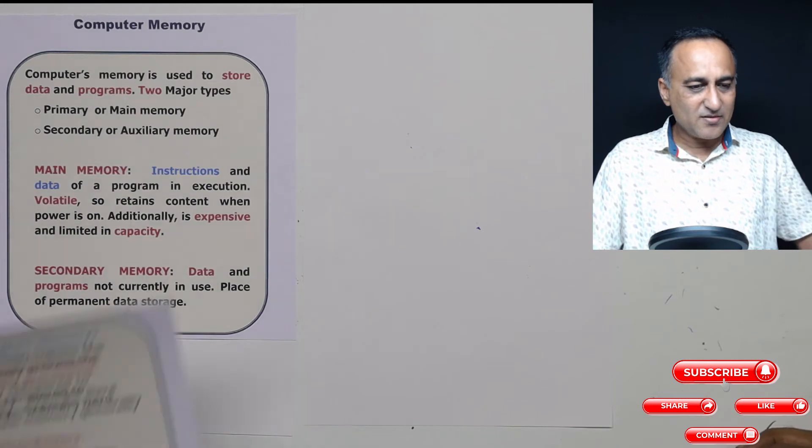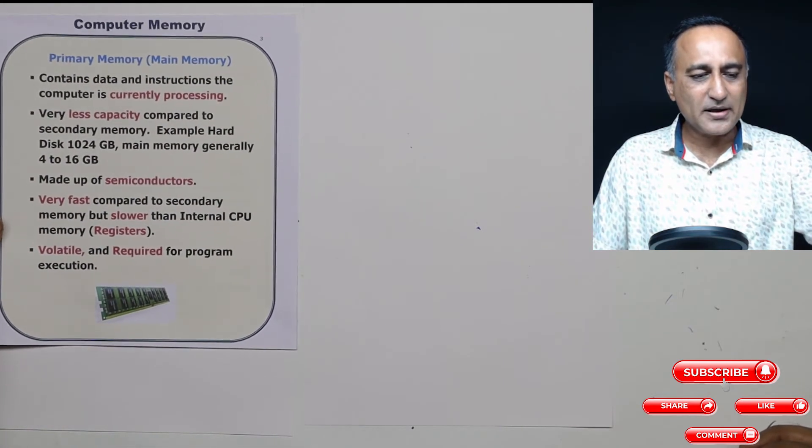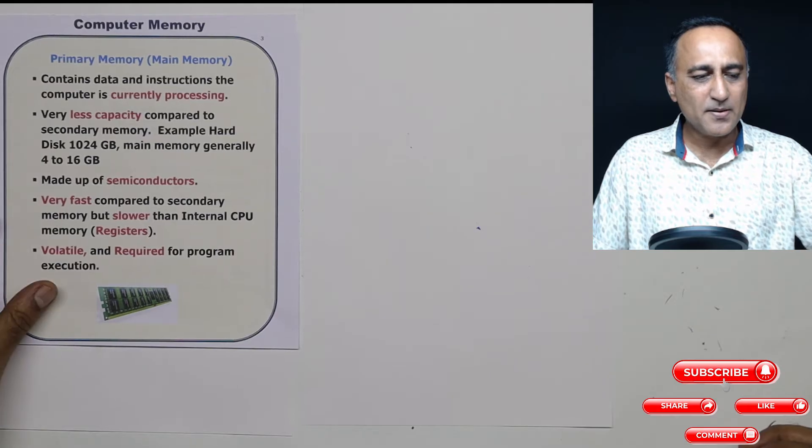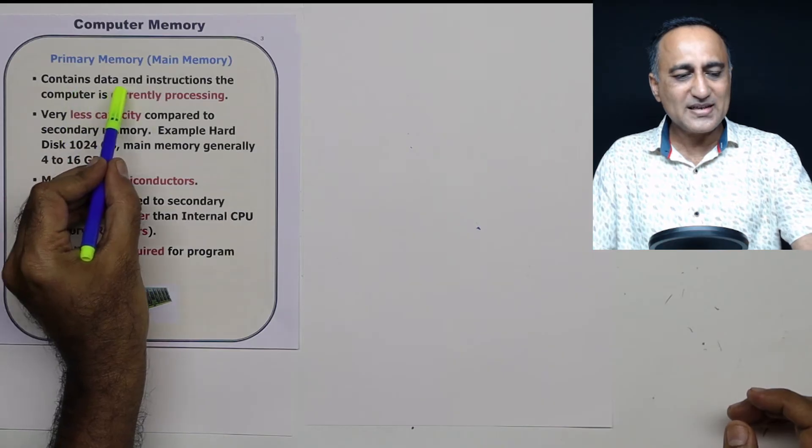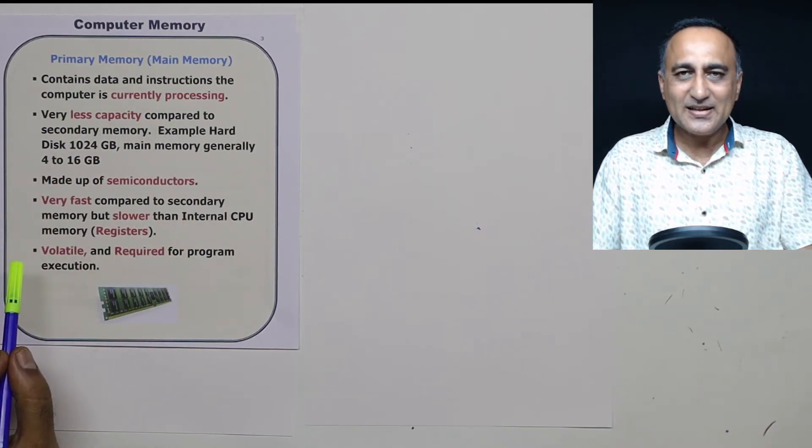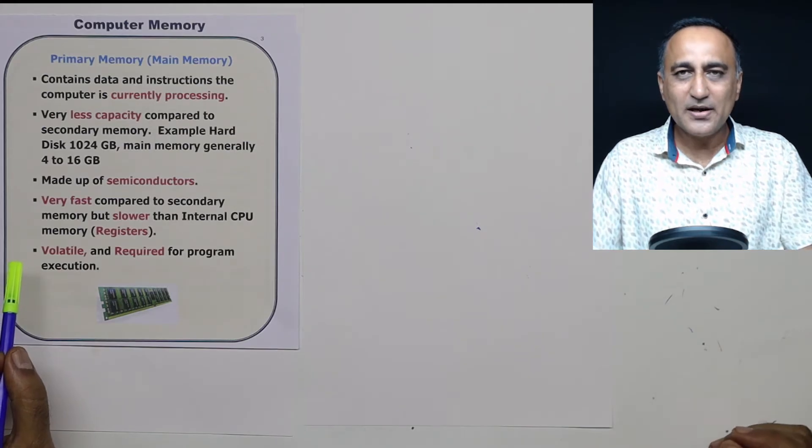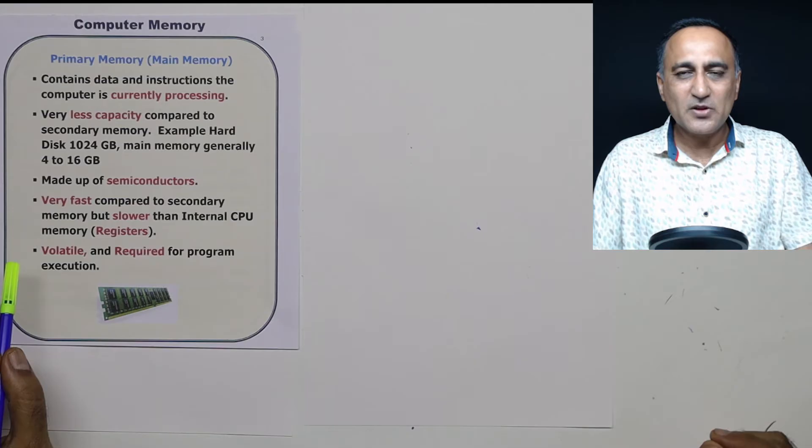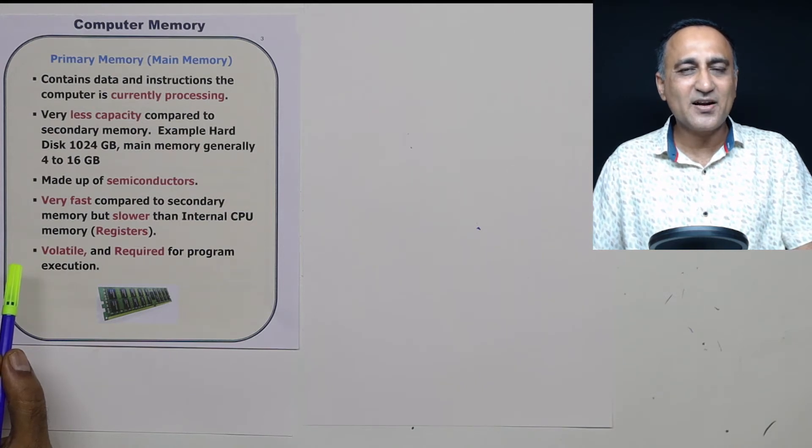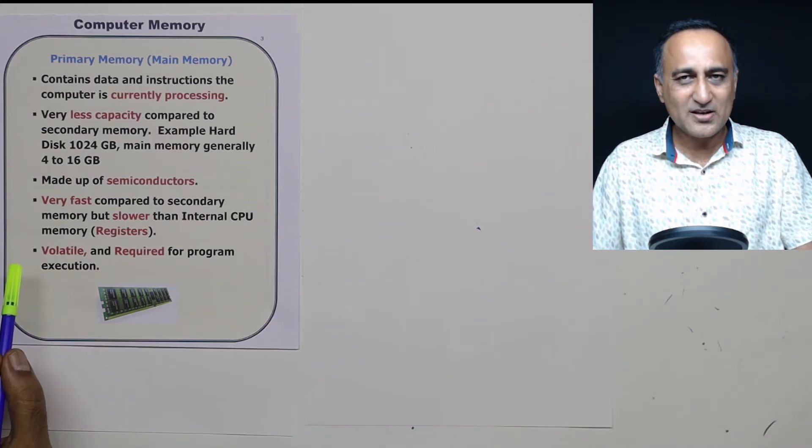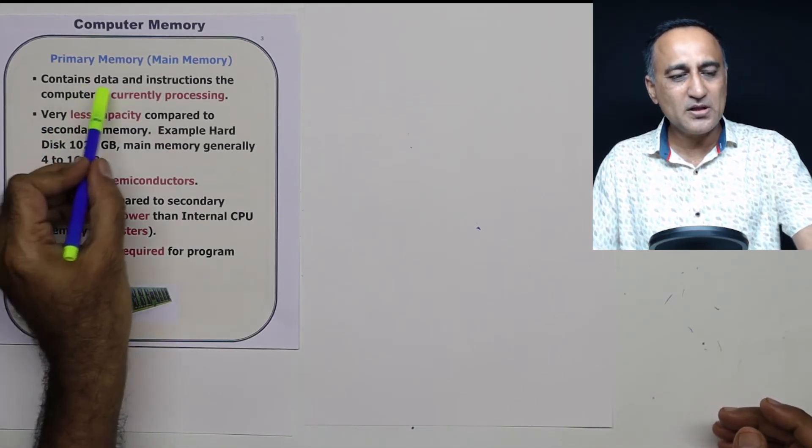Now let's try to just run through a little more bit about the main memory or the primary memory. As I told you, the main memory contains data as well as instructions that the computer is currently processing. For example, if you open up Word and you're typing something into it, Word also happens to be a program. So Word has a number of instructions and data. Whereas suppose you have not opened up the browser, you have not opened up Excel, all those Excel programs and any other data are going to reside on the secondary memory or the hard disk. Whereas only your word program is going to be in the main memory.